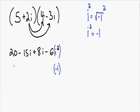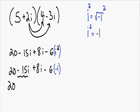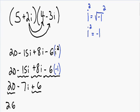Everything else in the expression stays the same. Starting on the left, we have 20 minus 15i plus 8i, and we have negative 6 being multiplied by negative 1. Now we just need to keep simplifying. We still have our 20, and in the middle we have two like terms: negative 15i and positive 8i. Negative 15 plus 8 is negative 7i. And on the right, negative 6 times negative 1 equals positive 6. We have a positive 20 and a positive 6, so 20 plus 6 equals 26. Our solution is 26 minus 7i.